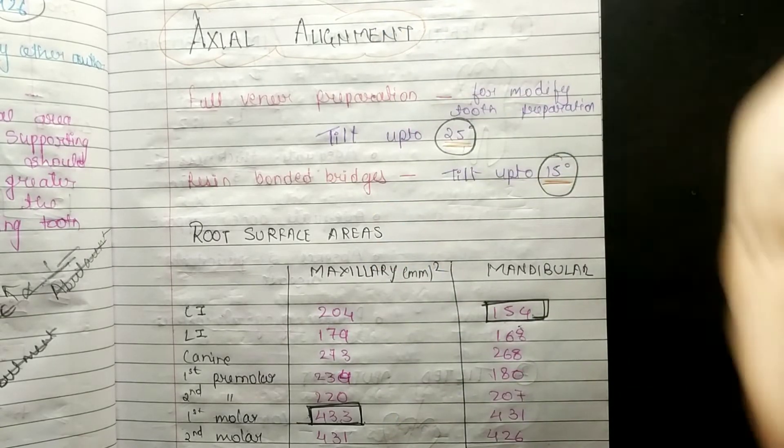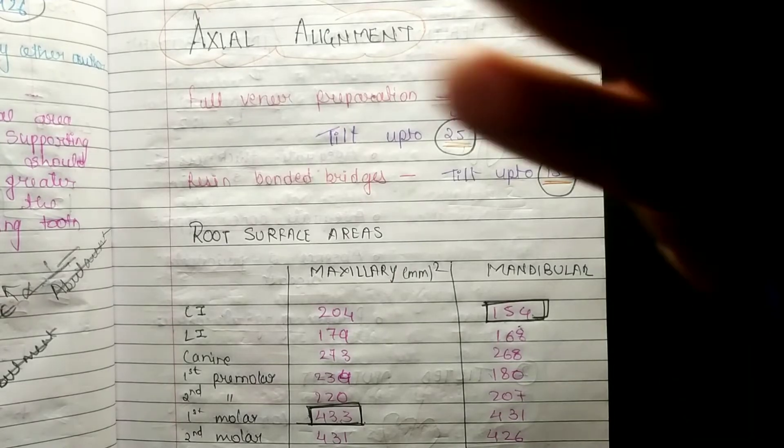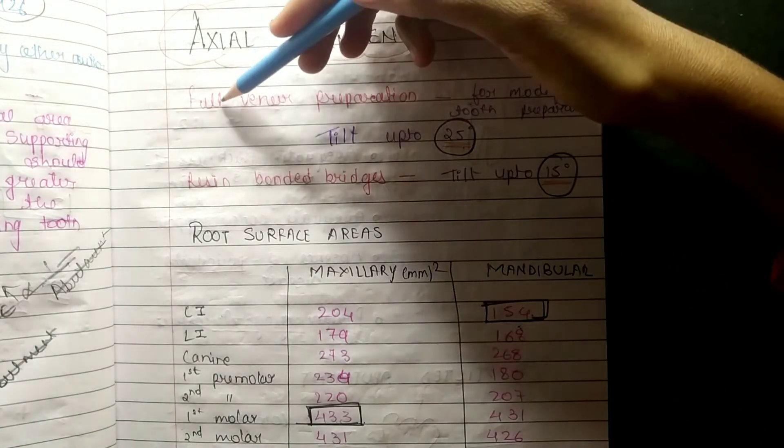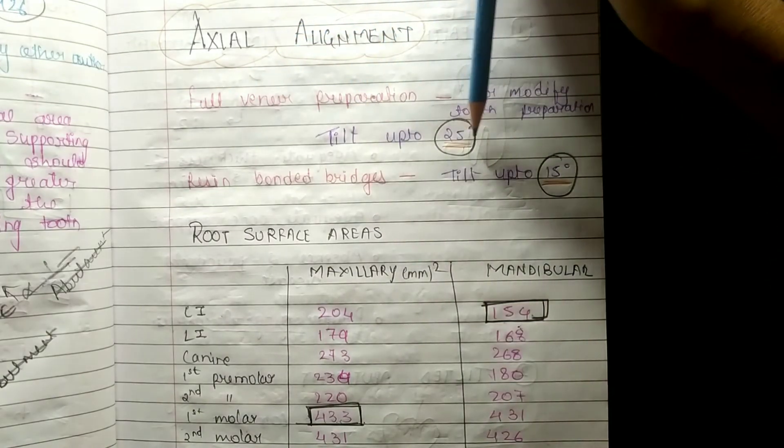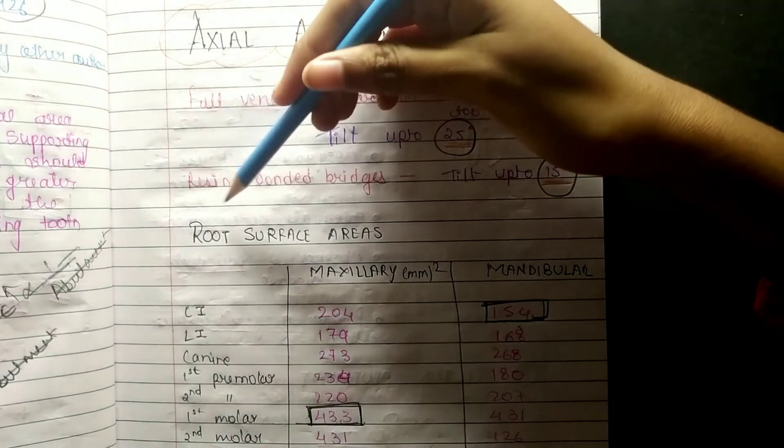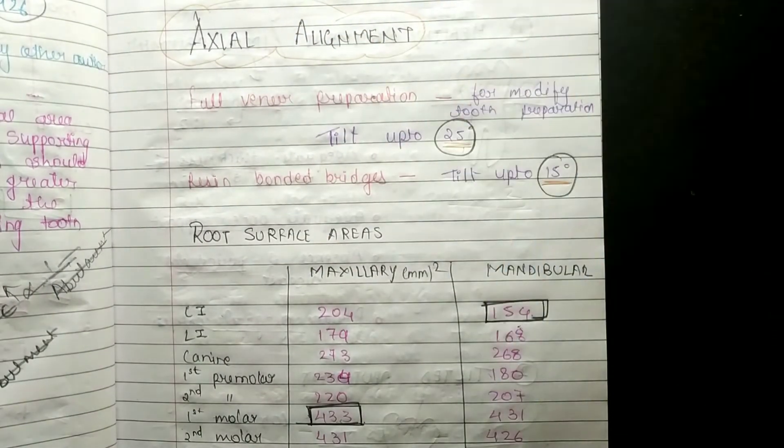We need to modify the tooth for tooth preparation. So we need to remember the angle of tilt we need. For full veneer preparation, the tooth should tilt up to 25 degrees, and resin bonded bridge, the tooth should be tilted up to 15 degrees.